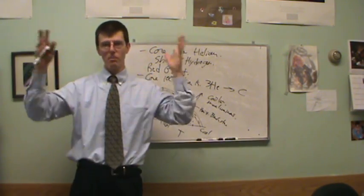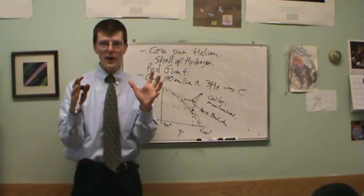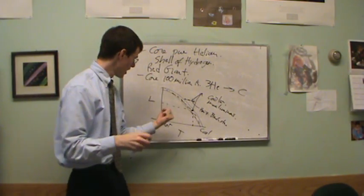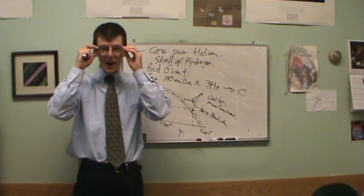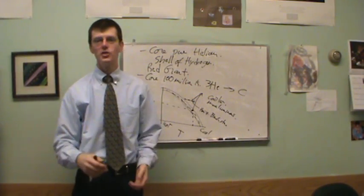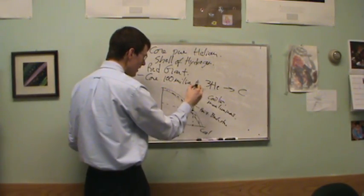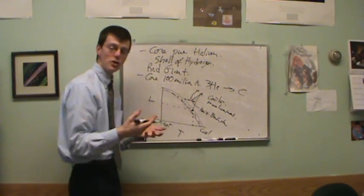and it becomes this horizontal branch star and it burns helium into carbon until it runs out of helium to burn. And now it has a core of pure carbon. And so now basically it does the same thing again. Now it burns carbon, helium in a shell around that. And so it kind of comes up here again, and it becomes a red giant a second time. Our sun will be a red giant twice.